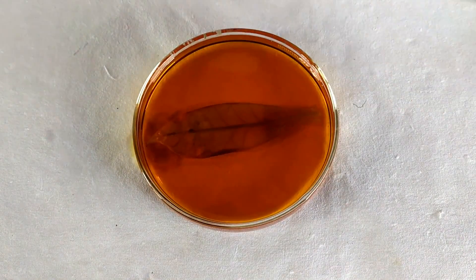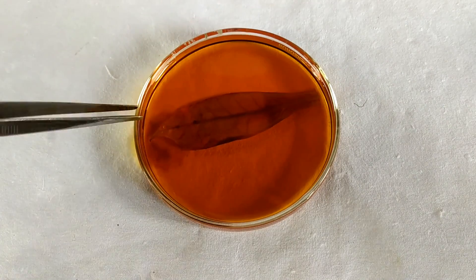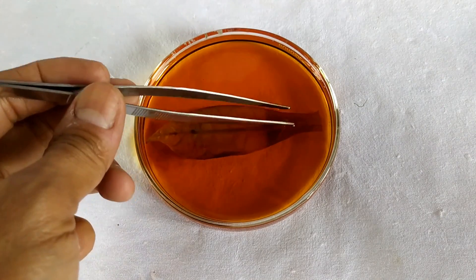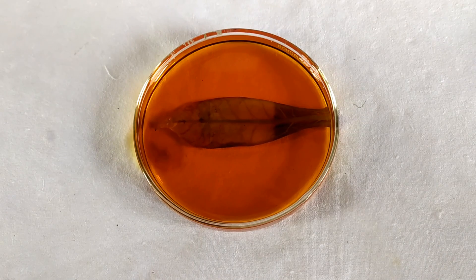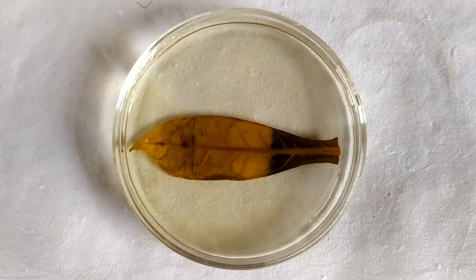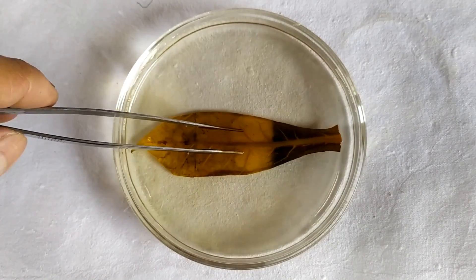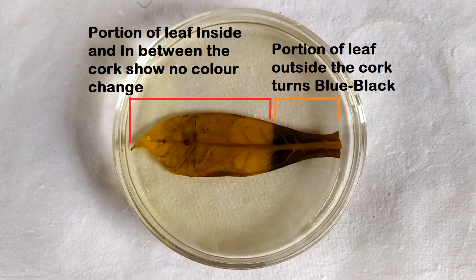Transfer the leaf into a petri dish containing iodine solution. After a couple of minutes, you will notice this result: the portion of the leaf outside the flask and the cork turns blue-black in color, while the portion of the leaf in between the cork and inside the flask does not show any significant change in color except for a faint brown iodine color. This is a negative test for starch and thereby photosynthesis.